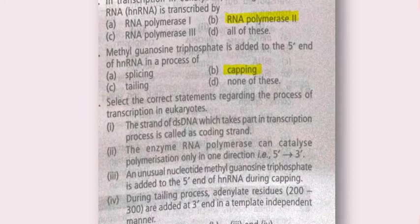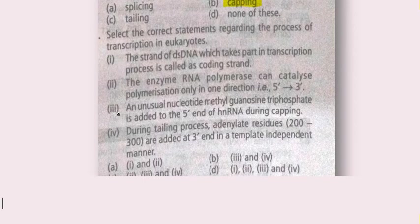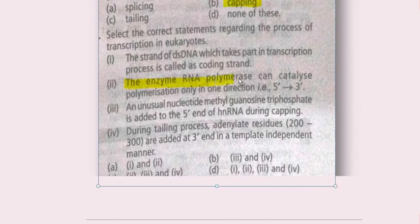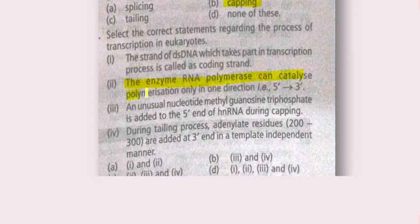Next question: select the correct statements regarding transcription in eukaryotes. Statement one: the strand of double-stranded DNA that takes part in transcription is called the coding strand. Statement two: RNA polymerase can catalyze polymerization only in one direction, 5' to 3'. Statement three: methyl guanosine triphosphate is added to the 5' end of hnRNA during capping. Statement four: during tailing, adenylate residues are added at the 3' end in a template-independent manner.